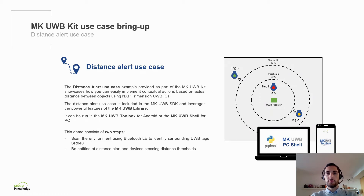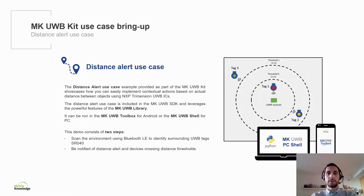The distance alert use case example, provided as part of the MKUltra Wideband Kit, showcases how customers can easily implement contextual actions based on proximity using ultrawideband technology and NXP Trimension Ultrawideband ICs. The distance alert use case is included in the MKUltra Wideband SDK and leverages the powerful features of the MKUltra Wideband Library, making it easy to get distance data from nearby tags. It runs in both the bundled MKUltra Wideband Toolbox app for Android and the MKUltra Wideband Shell for PC. This demo consists of two steps: the MKUltra Wideband Shield 2 first scans the environment using Bluetooth Low Energy to identify surrounding tags. Once an ultrawideband tag is detected, a ranging session is initiated between the shield and the tag.